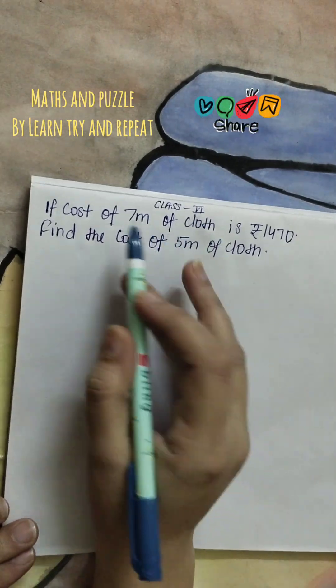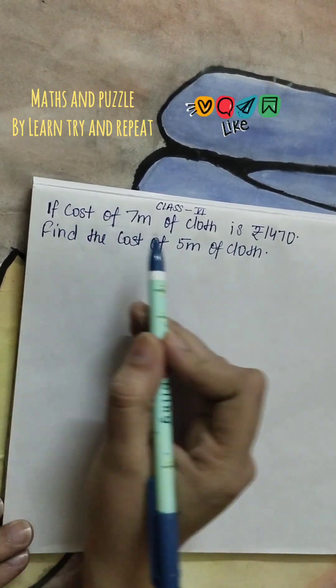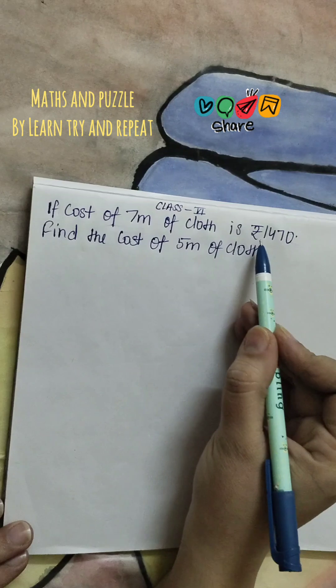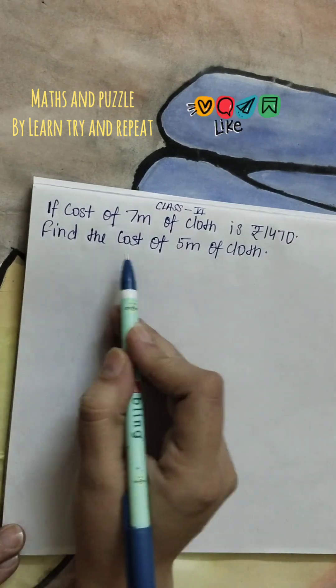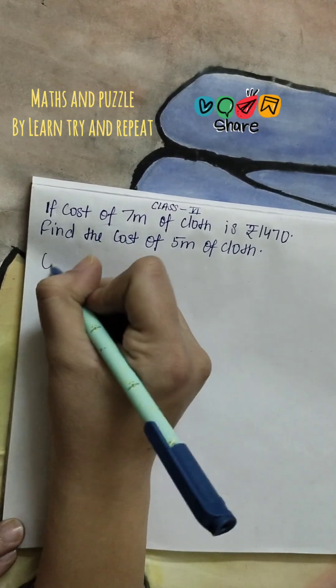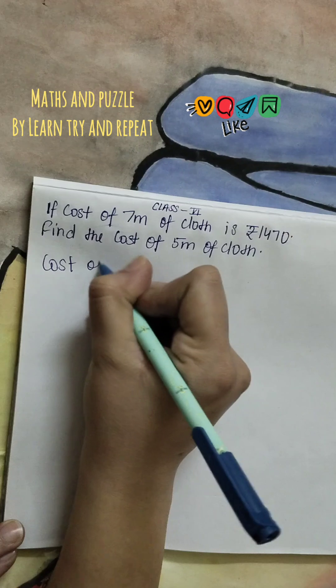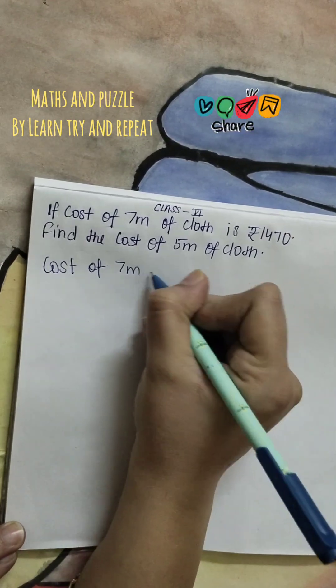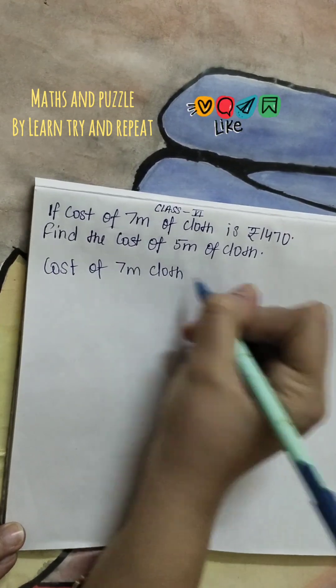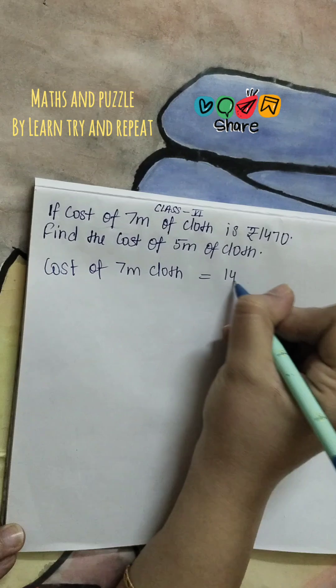Hello friends, welcome to my channel. This is a class 6th question. If cost of 7 meters of cloth is 1470, find the cost of 5 meters. So we will write the statement: cost of 7 meters cloth is equal to 1470.